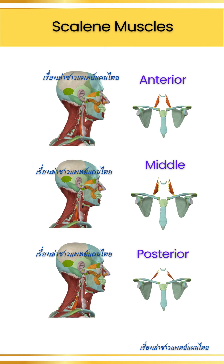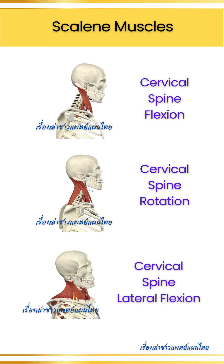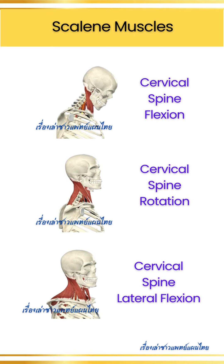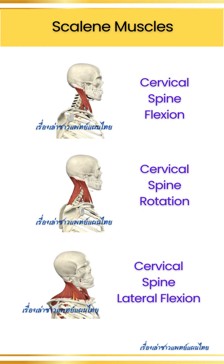Scalene muscles: divided into the anterior, middle, and posterior scalenes, these muscles are located on the sides of the neck, stretching from the cervical vertebrae to the first and second ribs. They help with lateral flexion and elevation of the ribs during forced breathing.